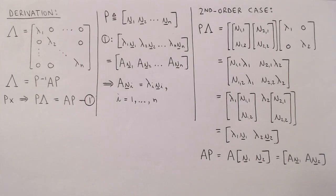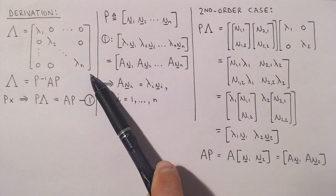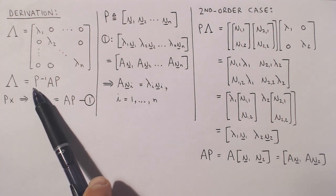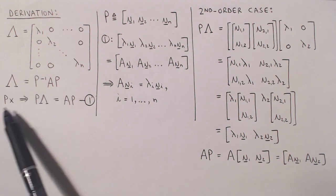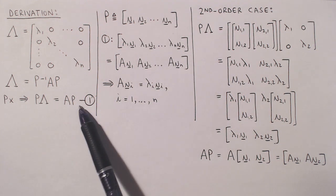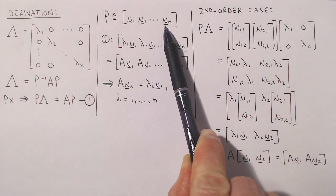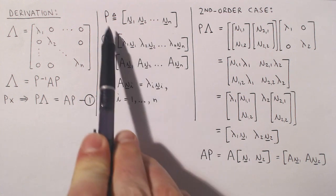Let's now derive the result that the transformation matrix P, which converts the state variable model to the modal canonical form, consists of the eigenvectors of system matrix A. The transformed system matrix capital lambda should be a diagonal matrix with eigenvalues on the diagonal. Lambda is calculated as the matrix product of the inverse of the transformation matrix, the original system matrix A, and the transformation matrix. By multiplying this equation with the transformation matrix we get equation 1. Let's label the columns of P as V1 to Vn, without yet attaching any special meaning to these columns.